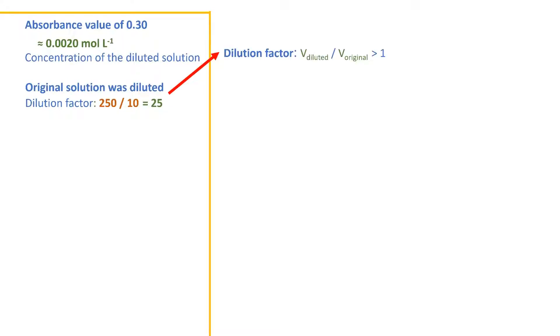This value will always be greater than 1, as the diluted volume is larger than the original. Multiplying this by the diluted concentration is what gave us the original solution's concentration.